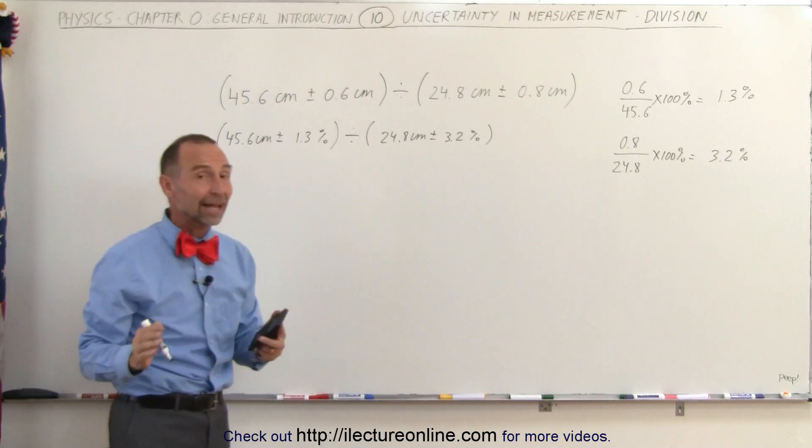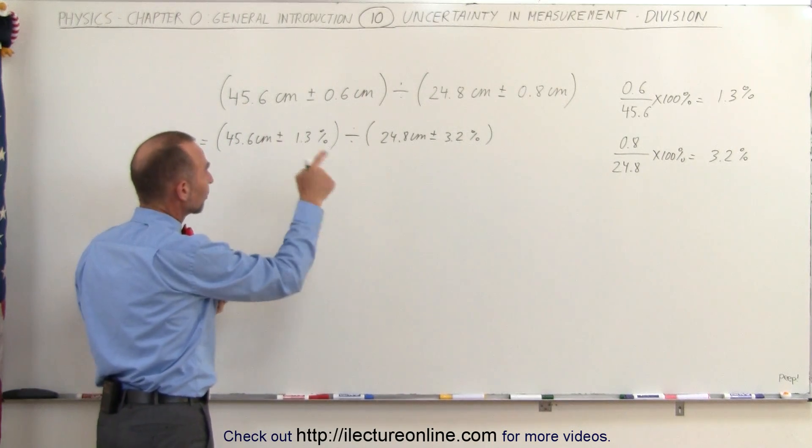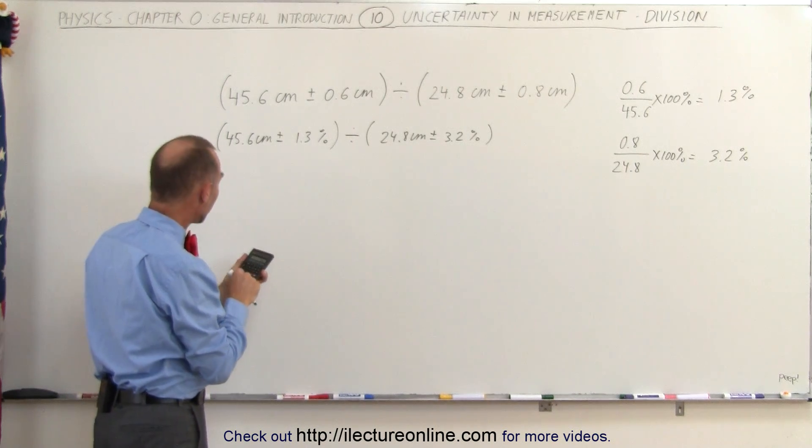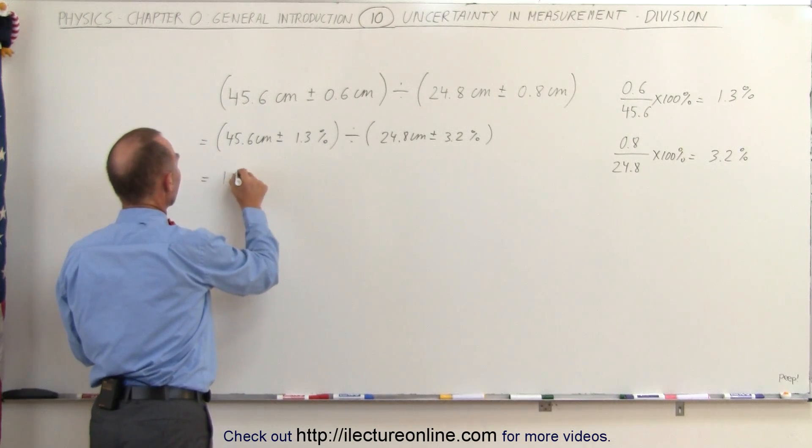All right, now we can go ahead and actually do the division. So this is equal to 45.6 divided by 24.8, and we get 1.84.